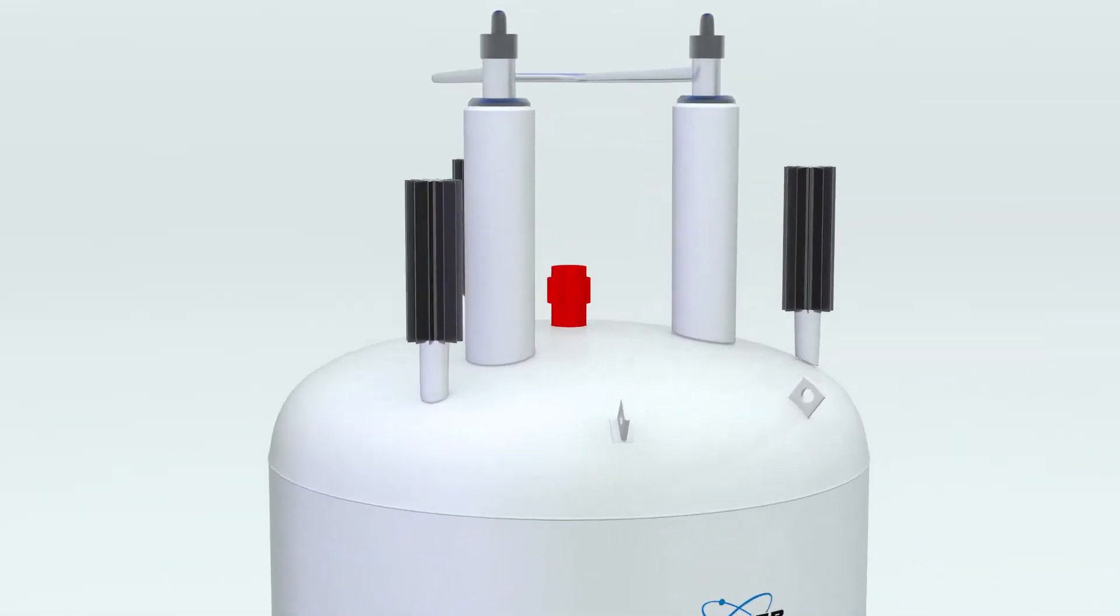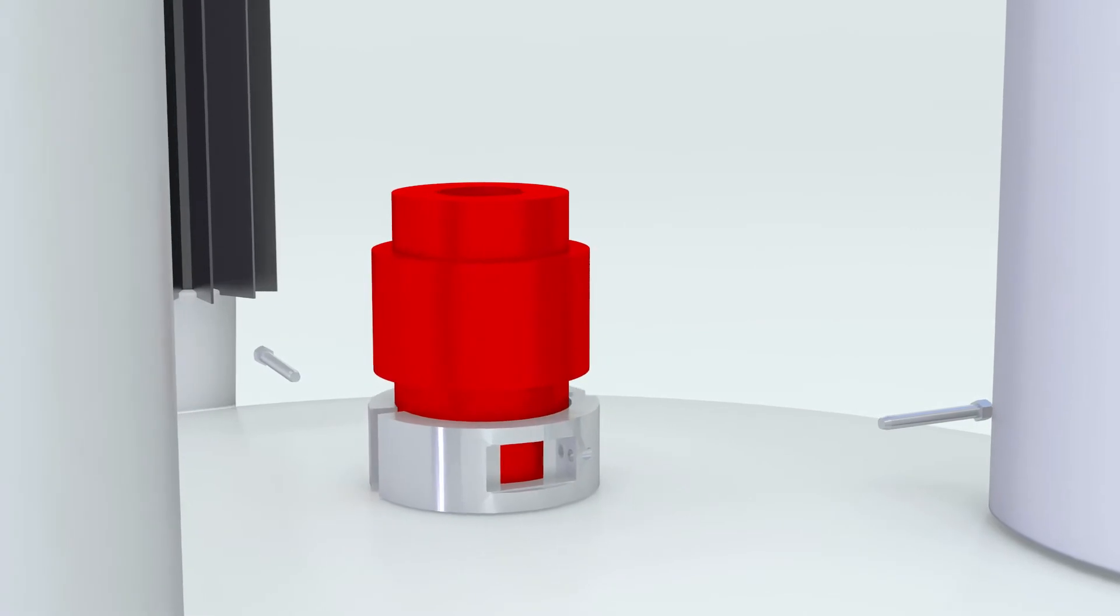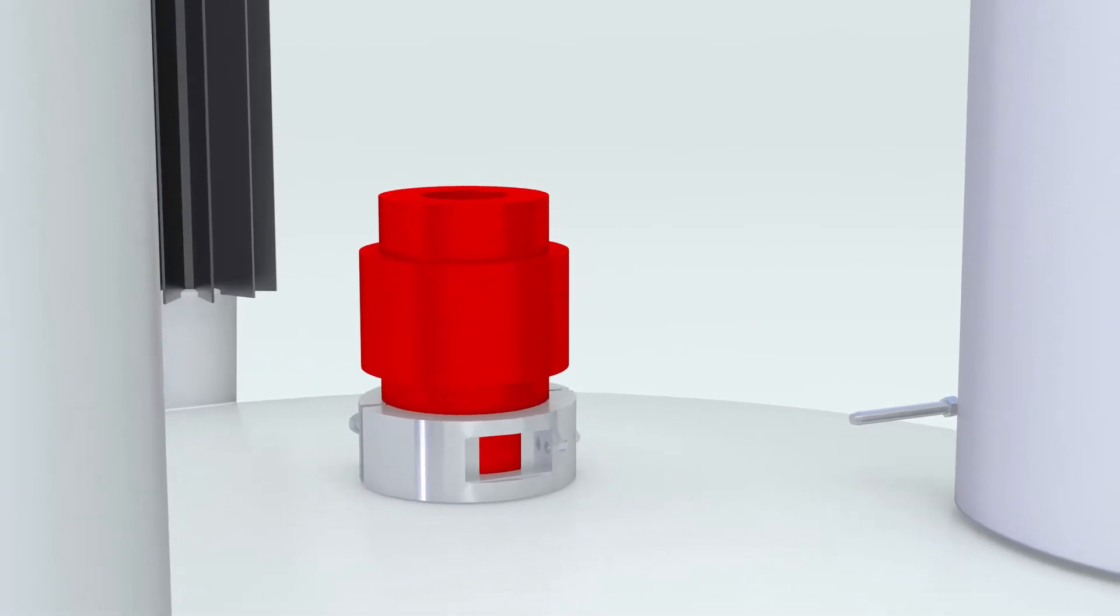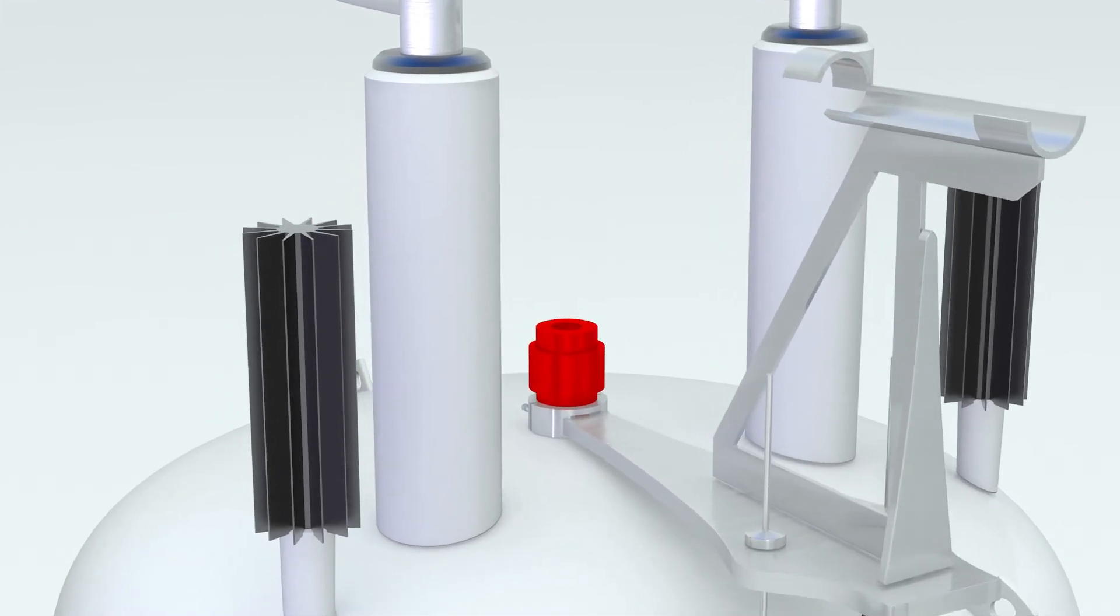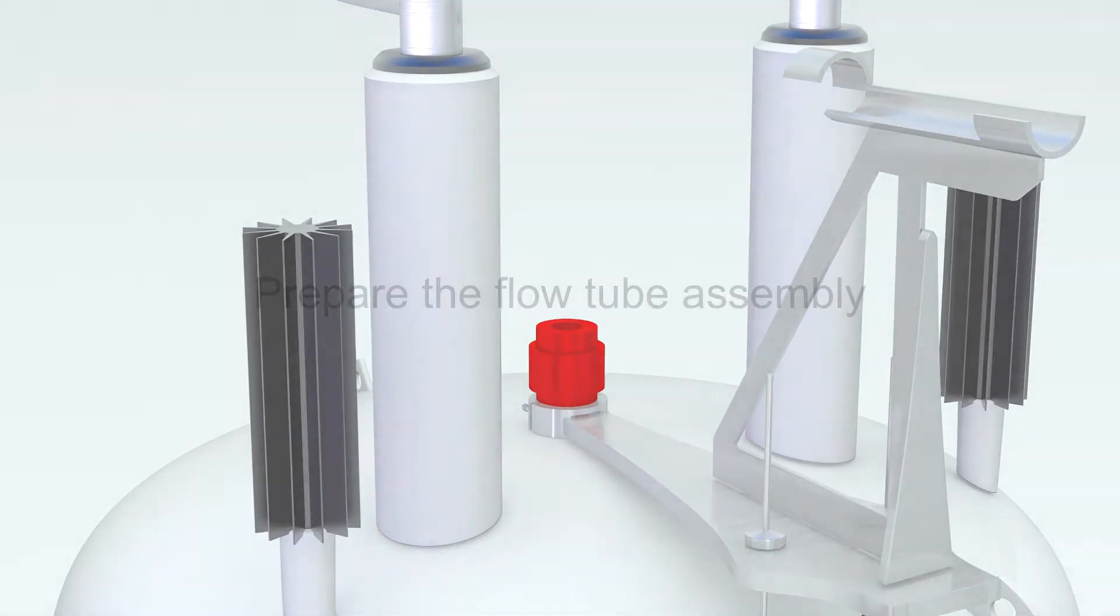Attach the transfer line holder to the Bruker sample transport, shown here on the red collar. Note that the transfer line holder cannot be used when the sample jet sample changer is installed.